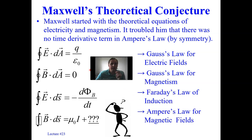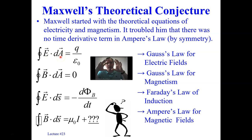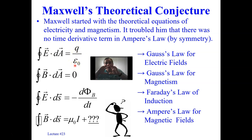Maxwell was saying that when you have a closed surface area integral of an electric field dot product with some area patch over an enclosed Gaussian surface, the only way there's a non-zero electric field over that surface is if there is an enclosed net charge inside. What's happening at the boundary in terms of electric flux tells you about the enclosed electric charge in the interior — a constant source term.